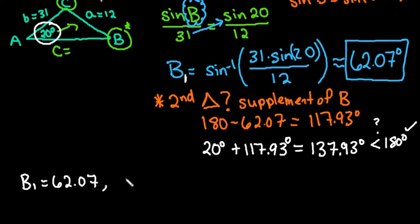And that tells us that we have to find angle C1. And we also have to find side C1. So I'm going to just put a little 1 on this to represent the first triangle.